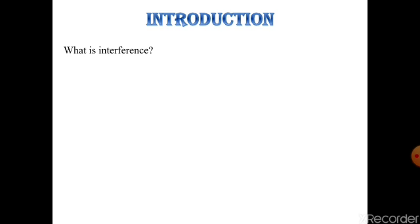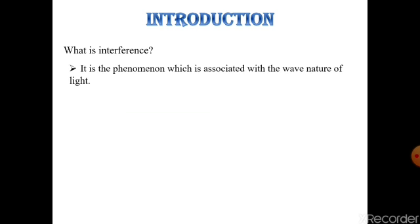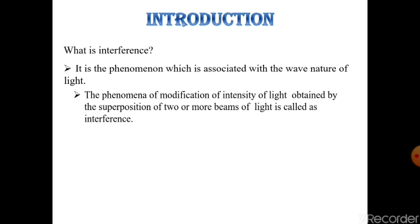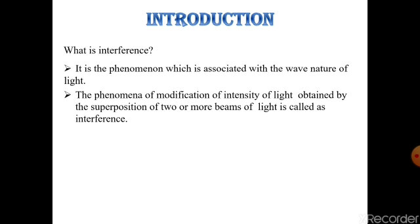Introduction: What is interference? It is the phenomenon which is associated with the wave nature of light. The phenomena of modification of intensity of light obtained by the superposition of two or more beams of light is called interference.